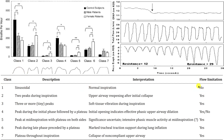Is there flow limitation in class one? No. Class two looks like this — you have a peak, then a plateau, then a second peak. They describe it as two peaks during inspiration, and their interpretation is the upper airway reopening after it initially collapses. Is there flow limitation? Yes. They do this for each one of these breaths. You guys can start looking at your own breaths and asking whether they look like any of these classifications.